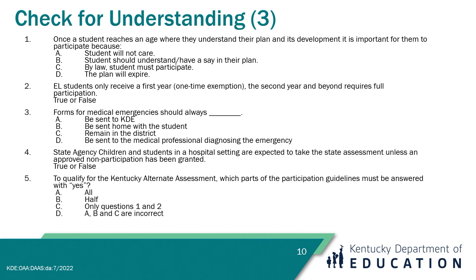Question 5: To qualify for the Kentucky Alternate Assessment, which parts of the participation guidelines must be answered with a yes? A. All. B. Half. C. Only questions 1 and 2. Or D. A, B, and C are correct. The answer is A — all parts of the participation guidelines must be answered yes.